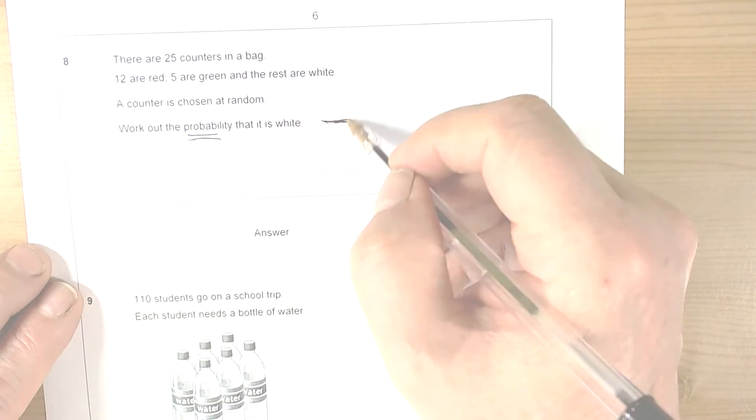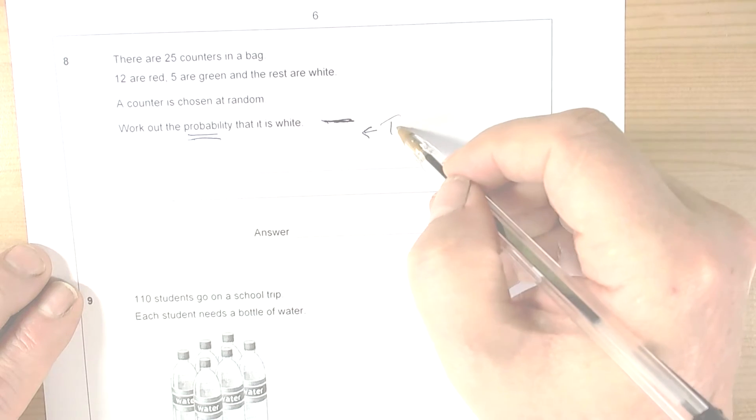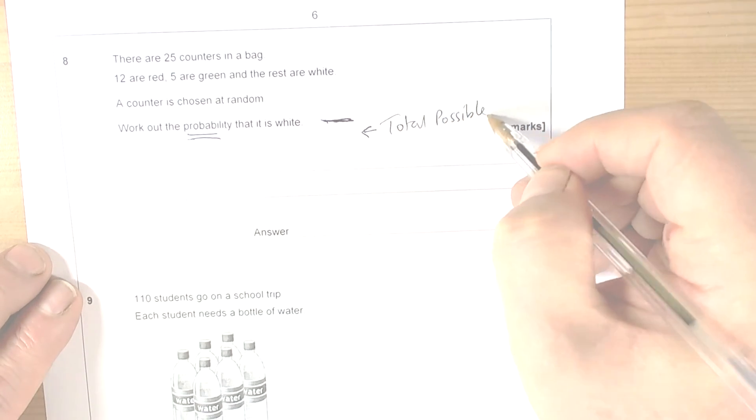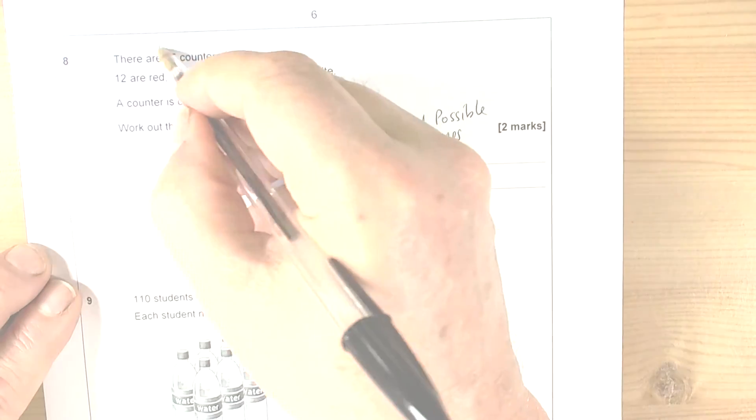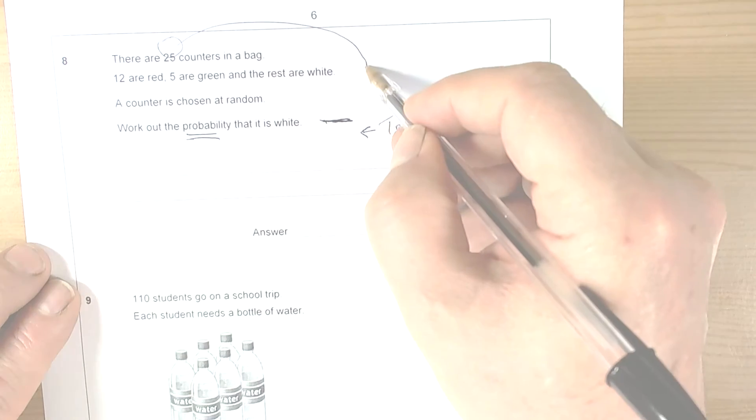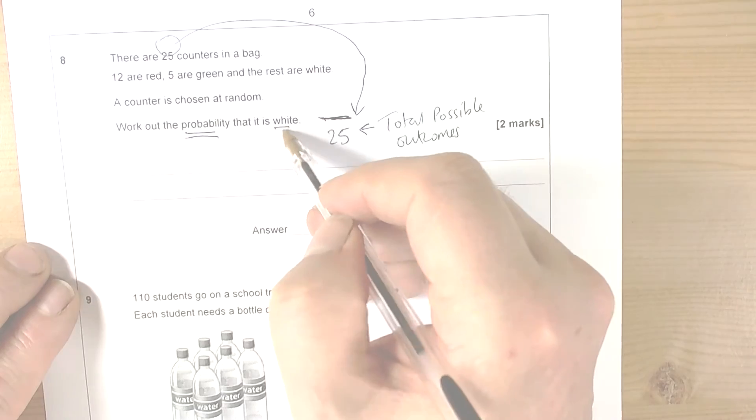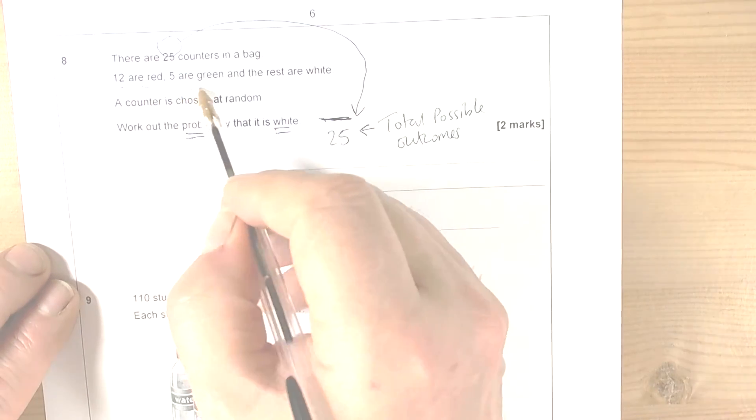So we've got the total number of outcomes, the total possible outcomes on the bottom. Well they told us there was 25 counters, so that's why we've got 25 there. And it wants the probability that it's white. So we can see there was 12 red, 5 green, and the rest were white.